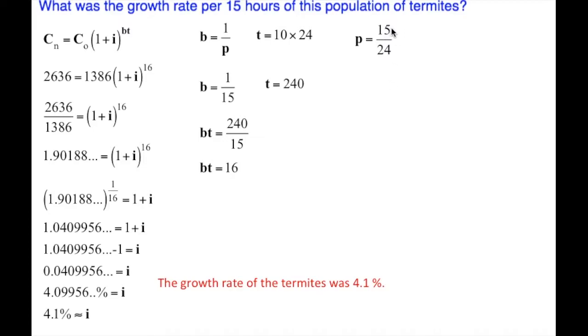If we reduce that, divide the top and bottom by 3, and that gives us 5/8 of a day. The B is going to be the reciprocal of the P. So 1 over P. So the reciprocal of 5/8 is 8/5, so the B is 8/5.